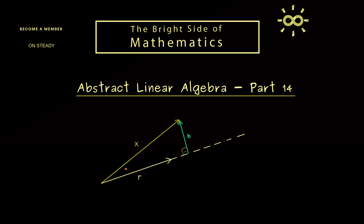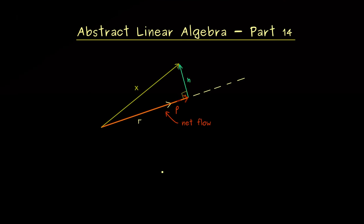So as mentioned in the last video, we want to do that with a right angle here, and then we get two vectors we can call n and p. The important vector p lies on the line here and gives us the net flow of the water. So you could say this is the part of x that pushes you in the correct direction.